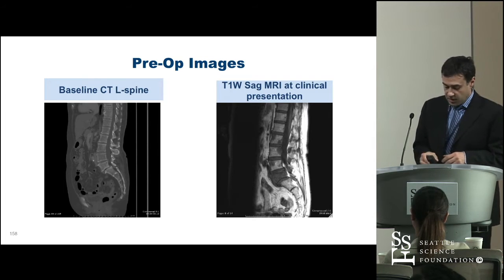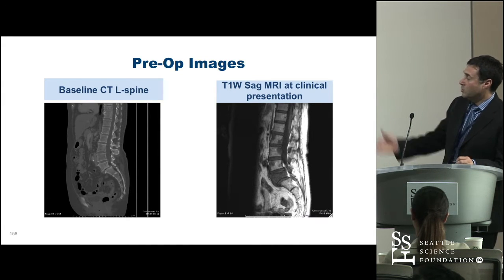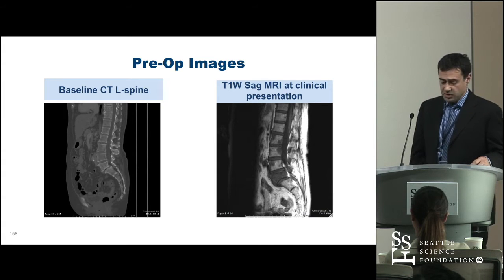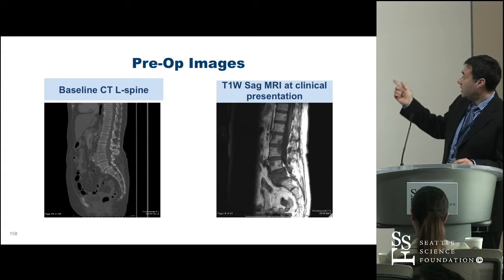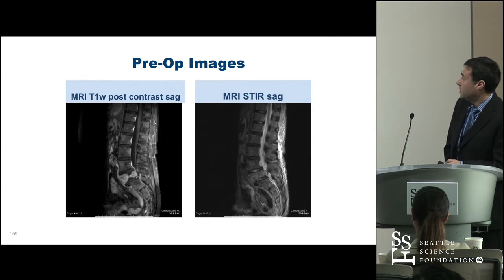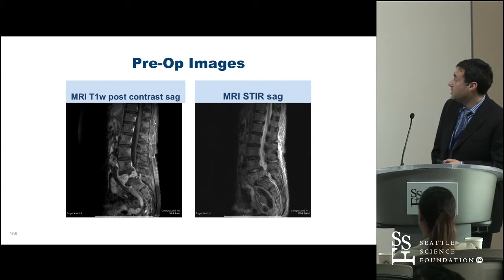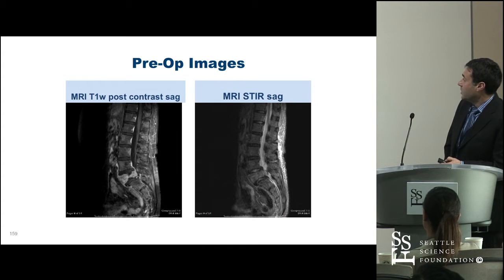Here's an example of L5 — relatively normal CT, there is some anterolisthesis, but at presentation you can see that the whole vertebral body is really tumor-infiltrated. That's proven on post-contrast MR with epidural extension, and there is canal narrowing there as well.